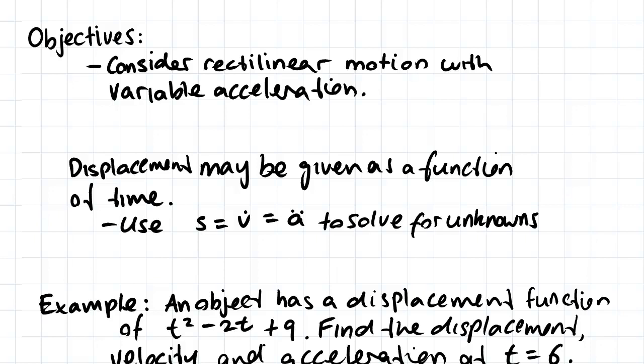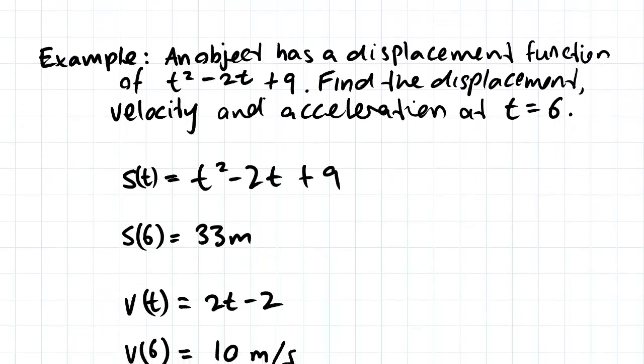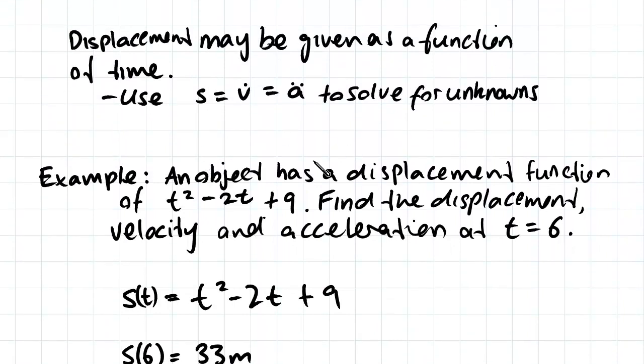So with that in mind we'll jump into doing an example. This example we've got here is an object which has a displacement function of t squared minus 2t plus 9, so that's the function.